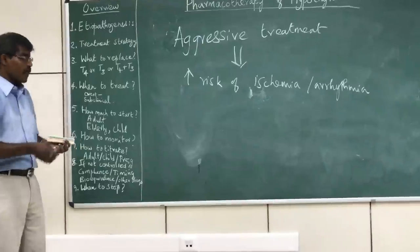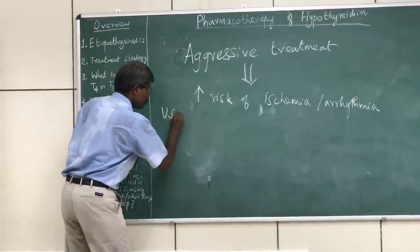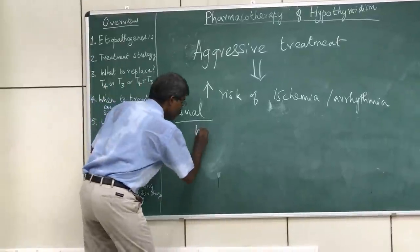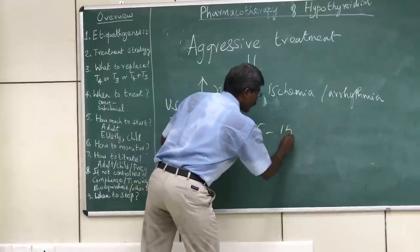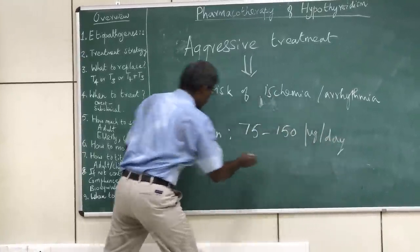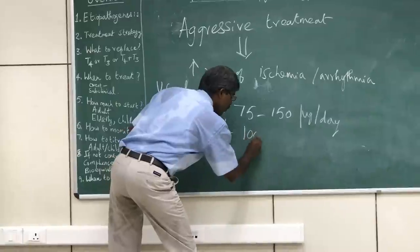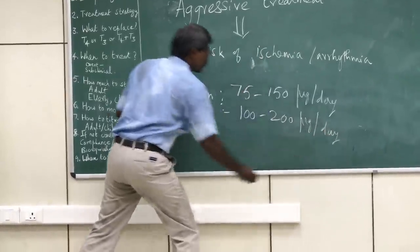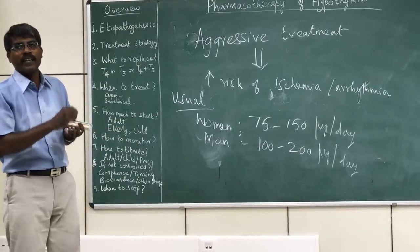The usual maintenance dose of levothyroxine replacement in women is 75 to 150 micrograms per day. In adult men, it is around 100 to 200 micrograms per day. Most patients will be maintained within these ranges.